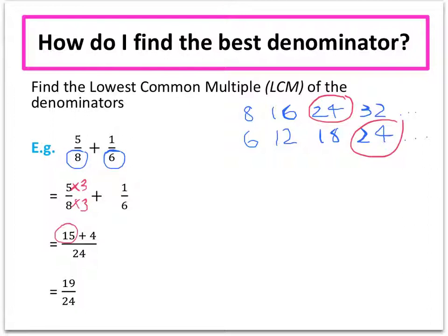What we do to the next fraction to get our common denominator of 24 is to multiply it by 4. So that's how we get our 4 over 24. The final step is to add them all together. So 15 and 4 make 19 over 24.